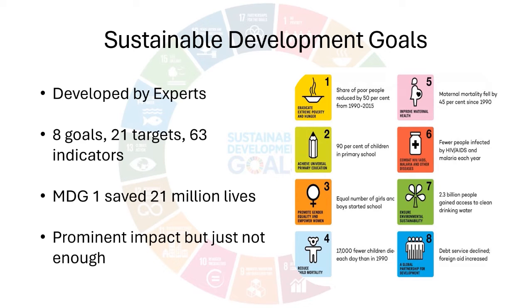Most of the MDG goals and targets required changes in the developing countries or by the developing countries, whereas only MDG-8, that is Global Partnership for Development, points to the responsibilities of developed countries. MDG-1 did a great job by reducing extreme poverty rates by half, five years ahead of the 2015 deadline, which constitutes almost 471 million people. Almost 21 million lives have been saved due to the accelerated progress. The impact was prominent, but just not enough and was uneven throughout the countries.